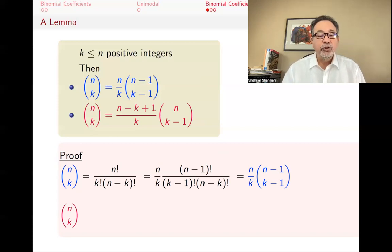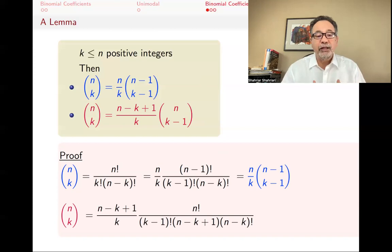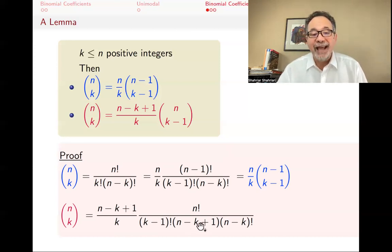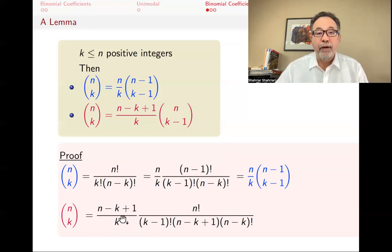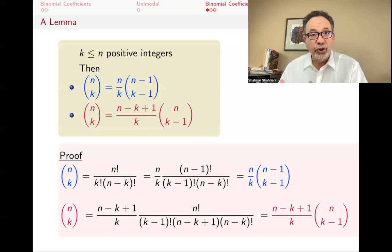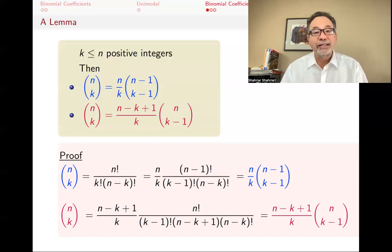For the second identity: n choose k is n! divided by k!(n−k)!. This time I factor a k out of k! to make it (k−1)!, but I don't take anything from the numerator. Instead, I introduce an (n−k+1) factor in both numerator and denominator. The (n−k+1) times (n−k)! becomes (n−k+1)!. What remains in the second part is n! / (k−1)!(n−k+1)! = n choose k−1, since n−(k−1) = n−k+1. So the second identity follows.